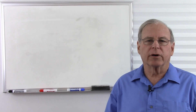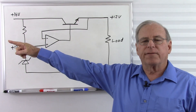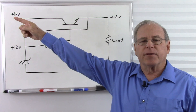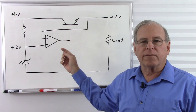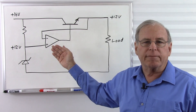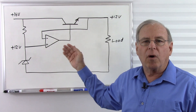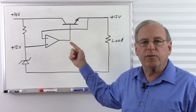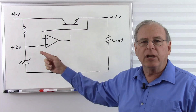Before we start talking about current limiting, let's take a quick review on how the circuit works. I'm not showing the transformer, the rectifier, or the filter because we've discussed that enough. We have 16 volts DC coming off of the rectifier and filter. The heart of our circuit is this operational amplifier. All we need to know is that the operational amplifier will change its output voltage to whatever it takes to make its two input voltages equal.